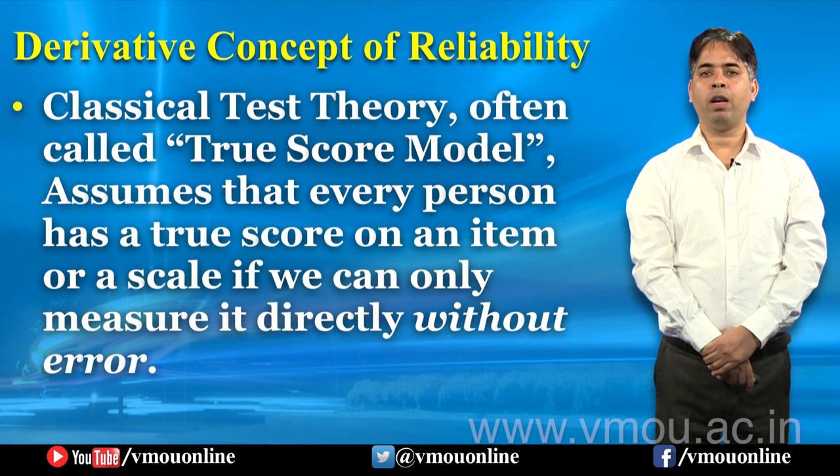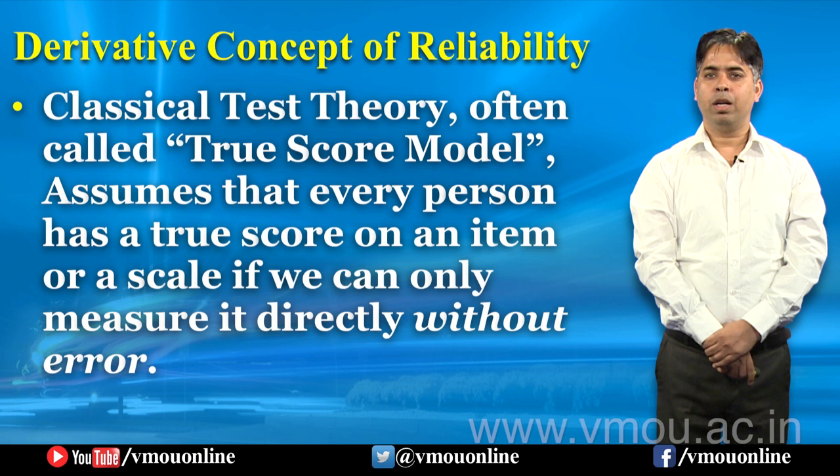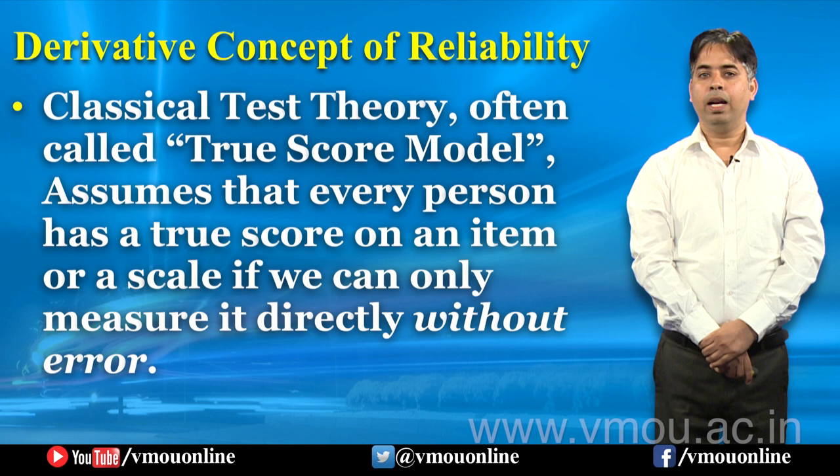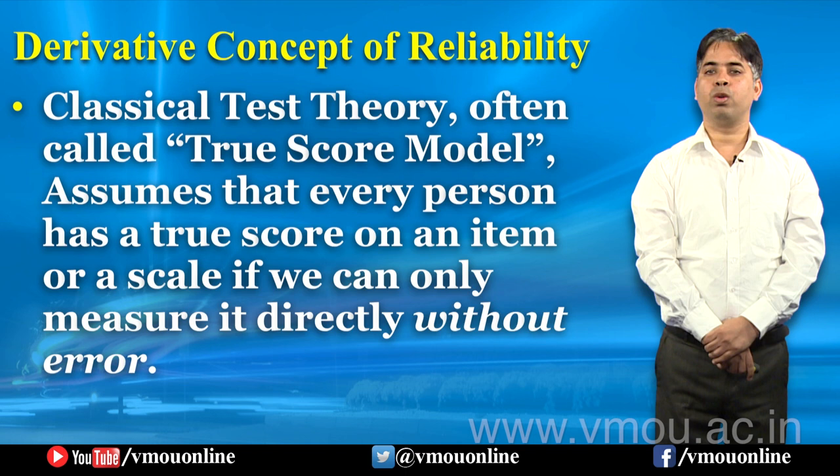Classical Test Theory सीधे-सीधे यह बात कहती है — जिसने True Score Model भी प्रपोज किया — उसने यहाँ बात कही कि हर व्यक्ति का कोई न कोई True Score होता है, किसी भी आइटम पर। बस आवश्यकता यह होती है कि हम बिना Error के उस True Score को measure कर सकें।